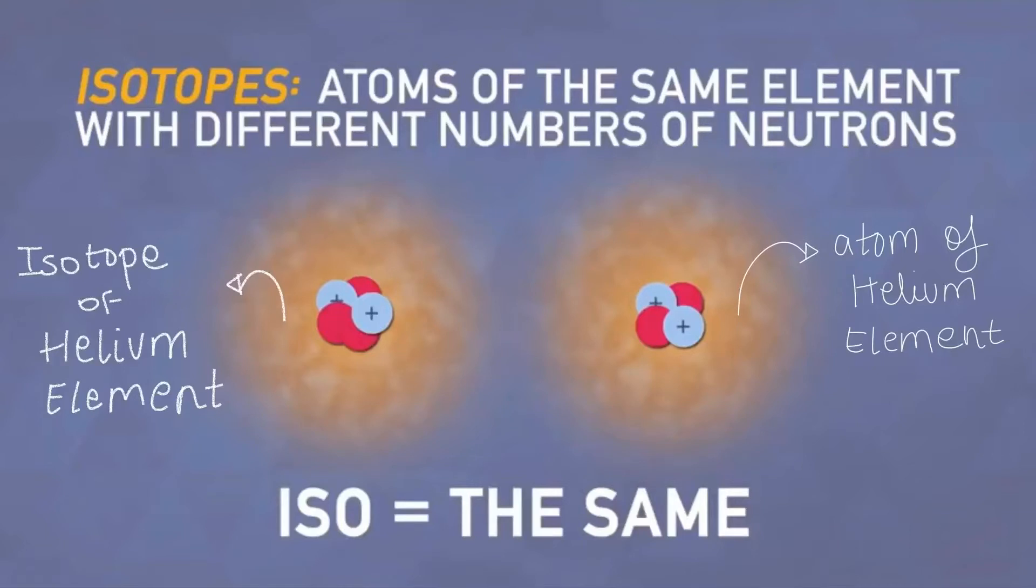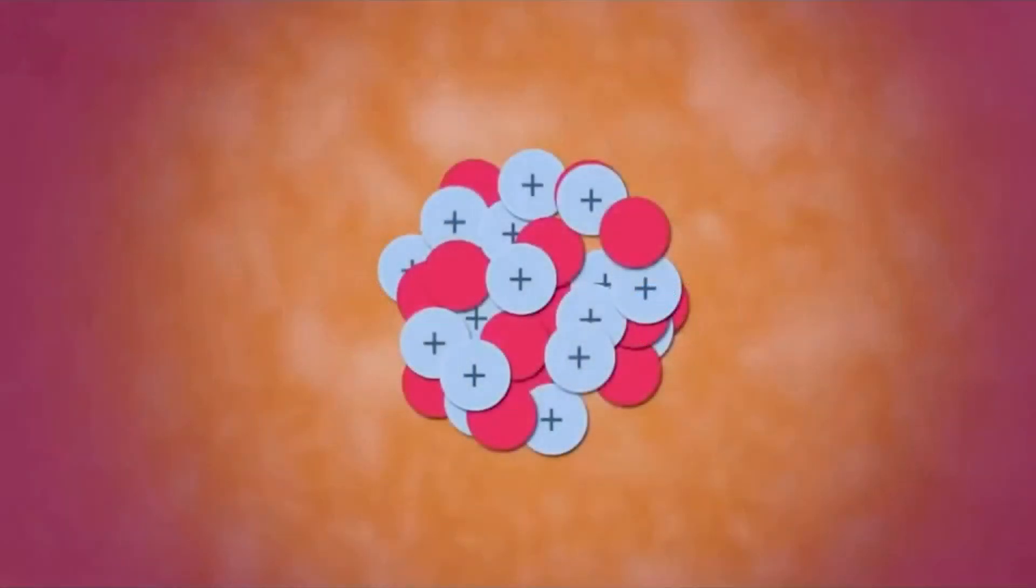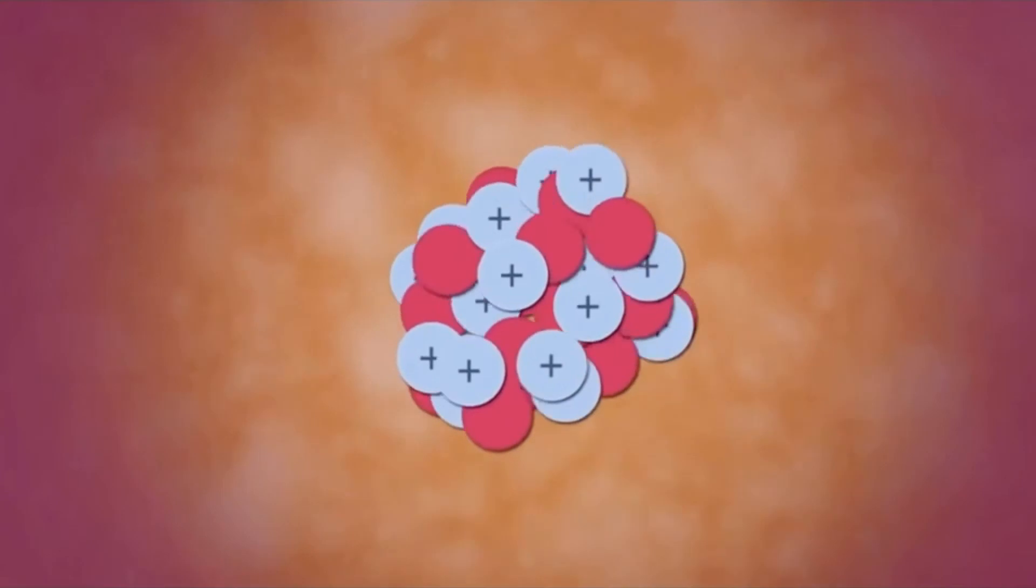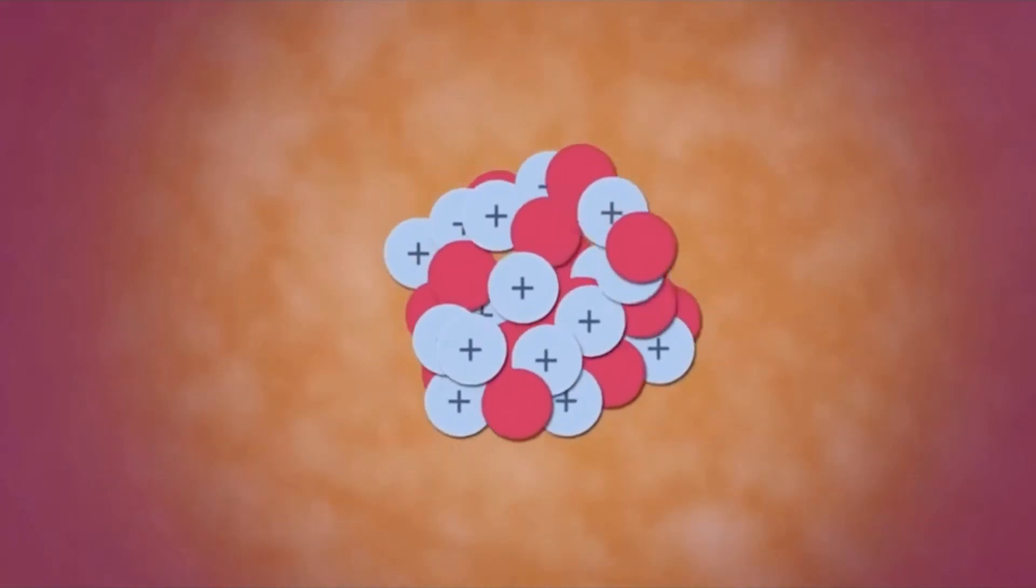An isotope is an atom of the same element with a different number of neutrons. An isotope becomes unstable when the number of neutrons is greater than the number of protons present in its nucleus. These unstable isotopes are also called radioactive isotopes.